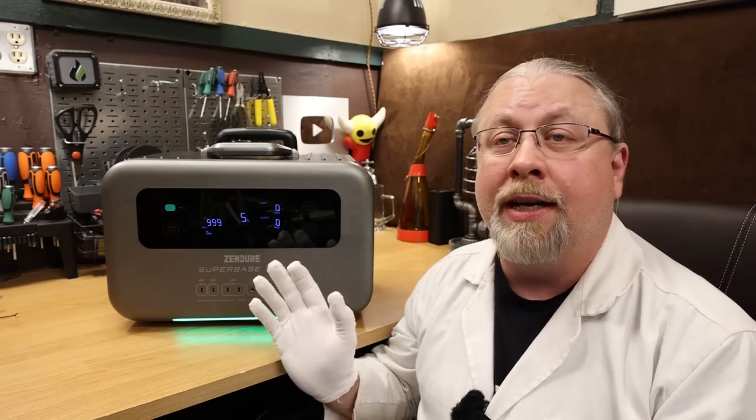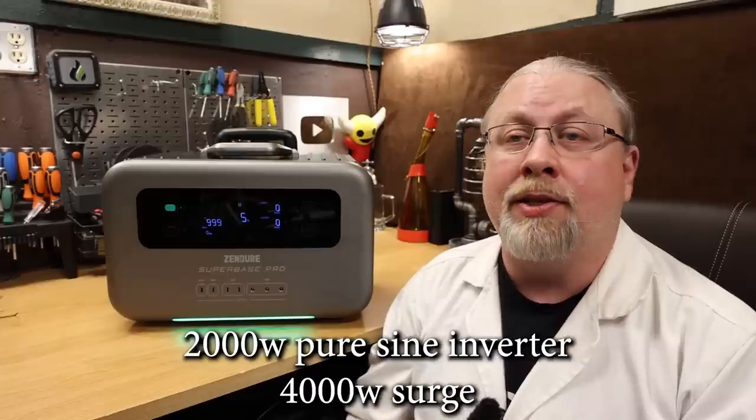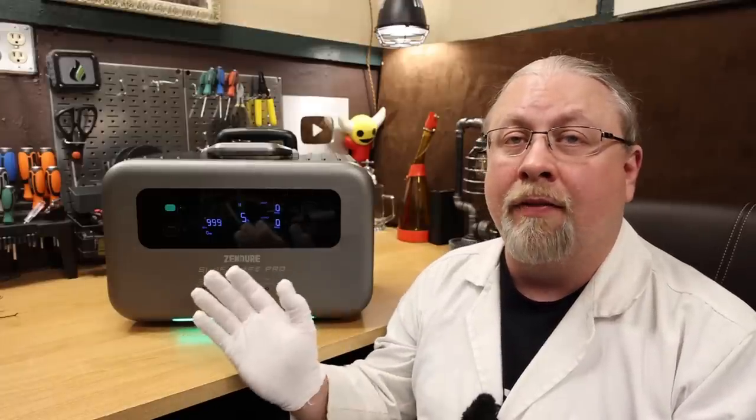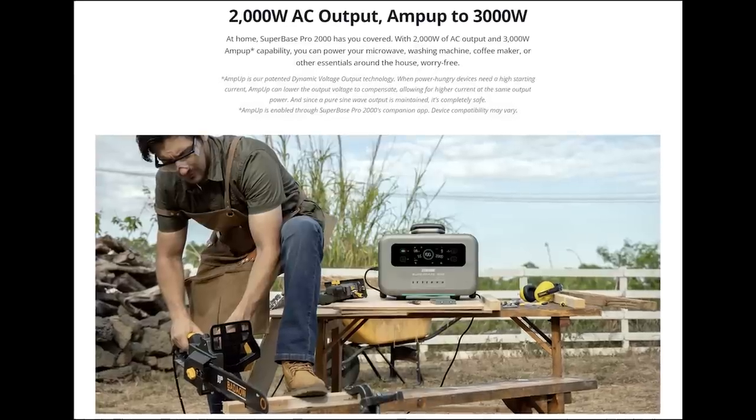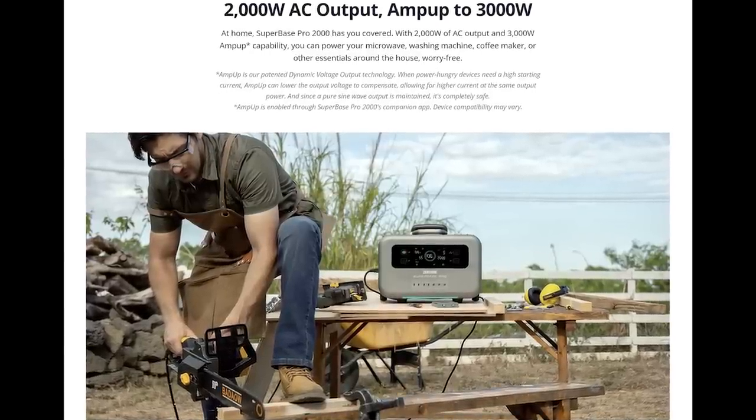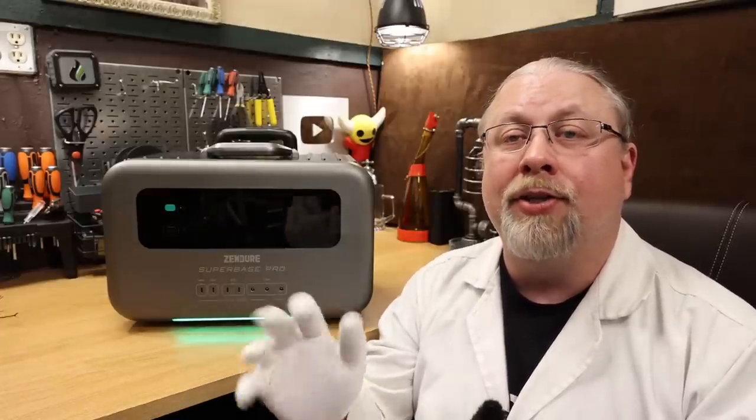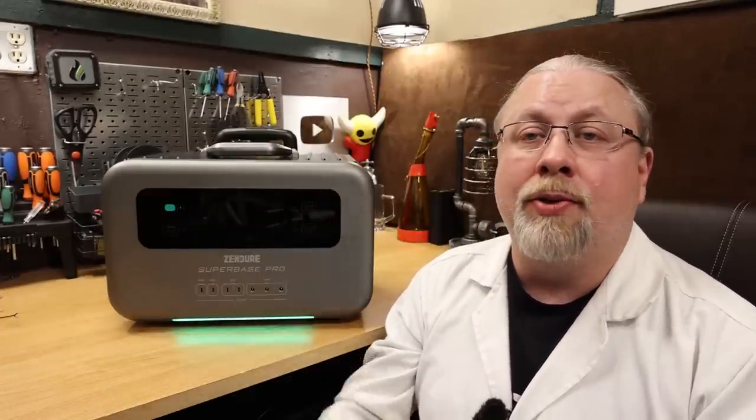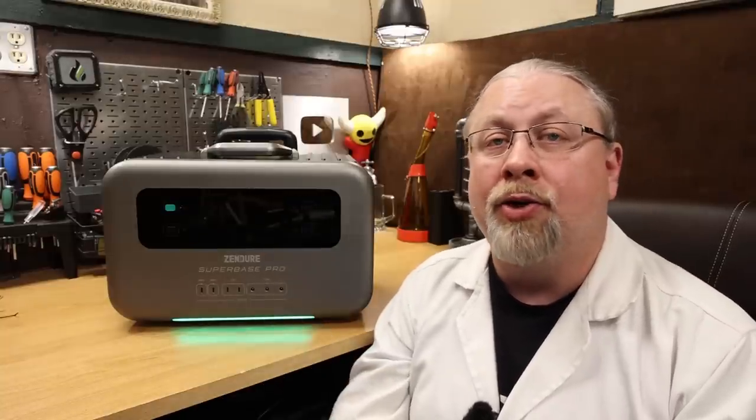As for inverter size, this unit sports a 2000 watt pure sine inverter with 4000 watt surge. Note that Zendure does offer a feature called Amp Up, which you can turn on or off inside the app, and it works the same as EcoFlow's XBoost. It'll allow you to power devices up to 3000 watts by dropping the output voltage. Now, this is fine for power tools or a coffee maker, but should be turned off if you're powering anything with a microchip or a compressor like a microwave or an air conditioner.